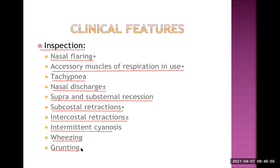What is the pathogenesis of grunting? In bronchiolitis, the main problem is atelectasis of the alveoli. To keep those alveoli open, there is a compensatory mechanism: partial closure of the vocal cords, so that increased pressure is generated inside the lung and that excessive pressure keeps the alveoli open. When air passes through those partially closed glottis or vocal cords, a sound called grunting is heard. That is the basic mechanism of grunting.